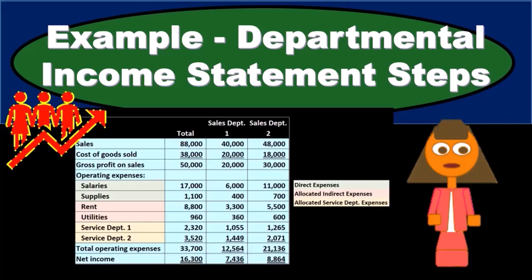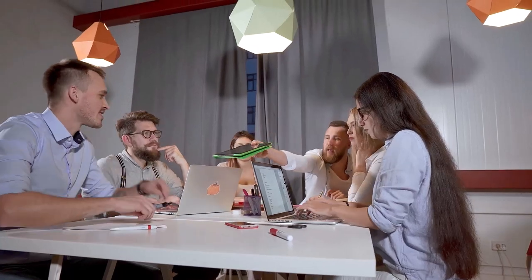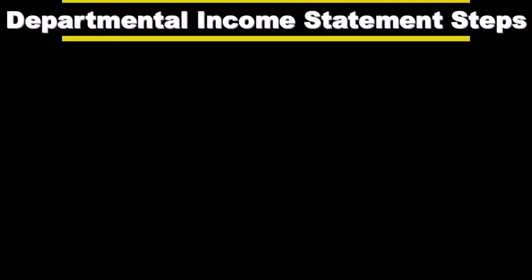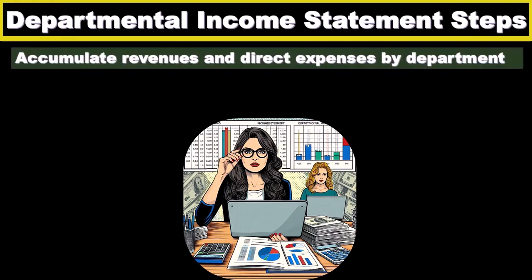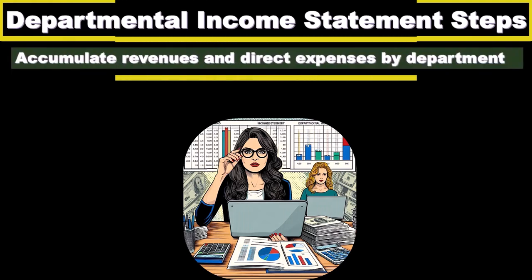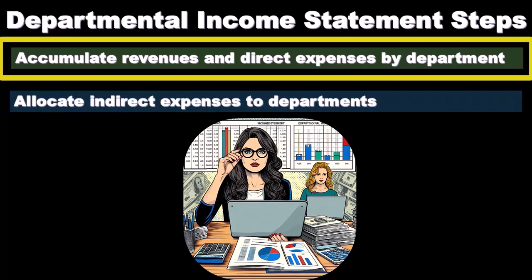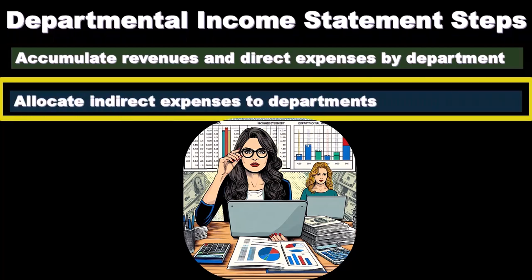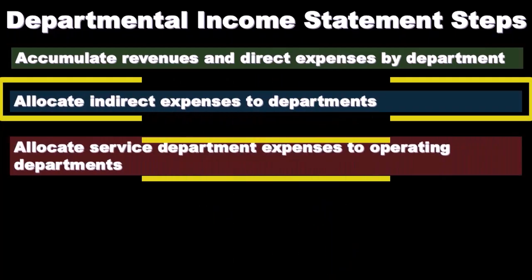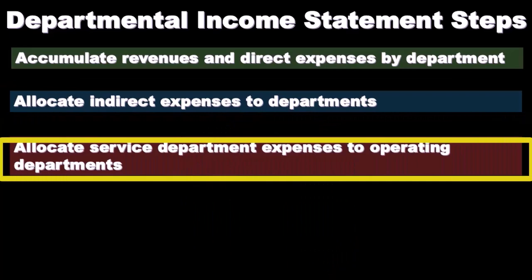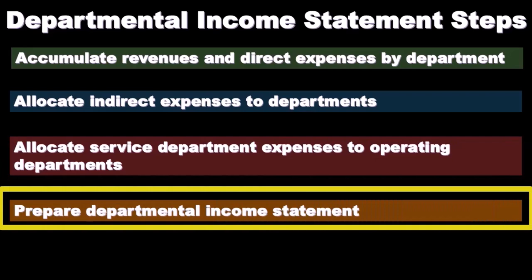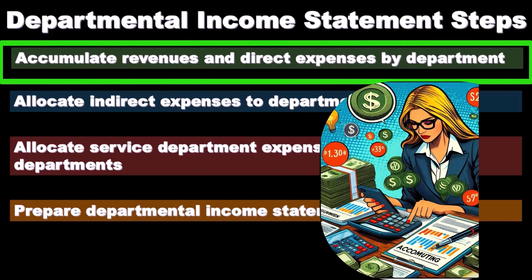In this presentation we will work an example problem related to steps to take to create the departmental income statement. Here's a review of the four steps: we will accumulate revenue and direct expenses by department, allocate indirect expenses to departments, then allocate service department expenses to operating departments, and finally prepare the departmental income statement.